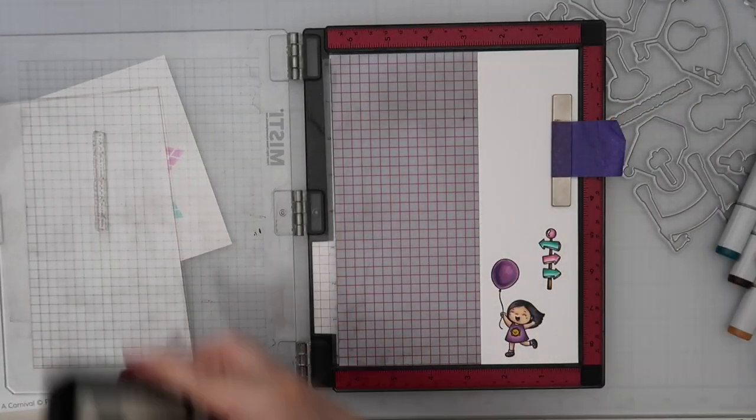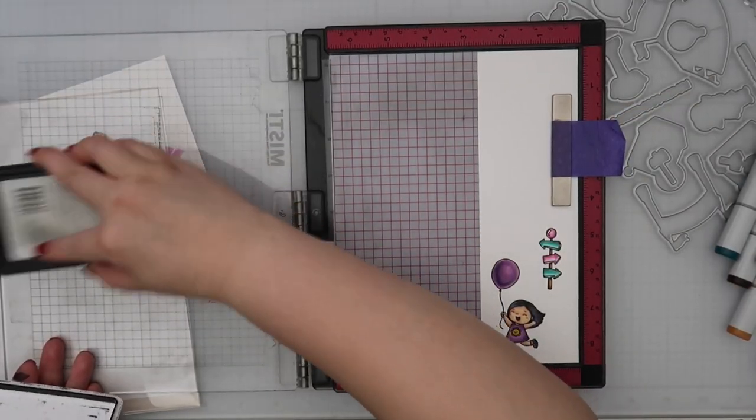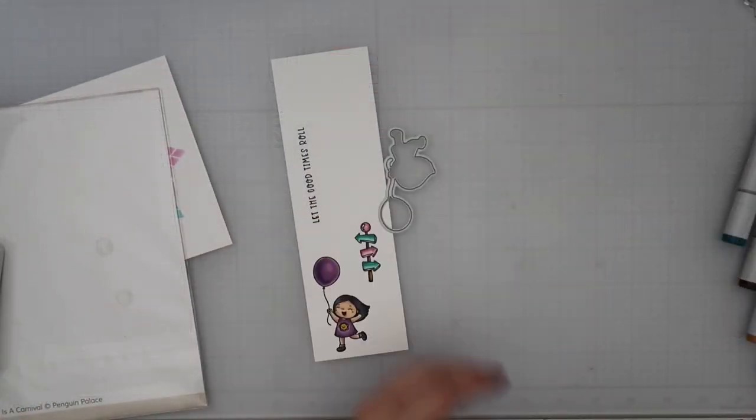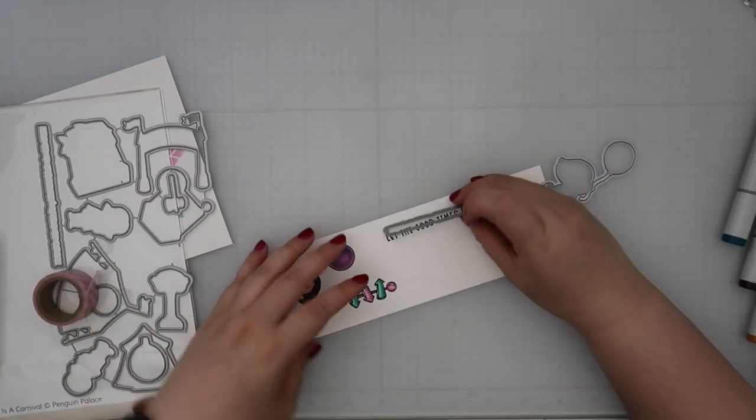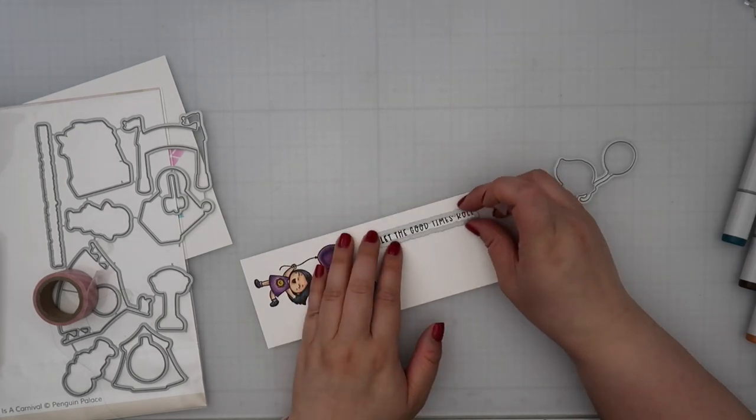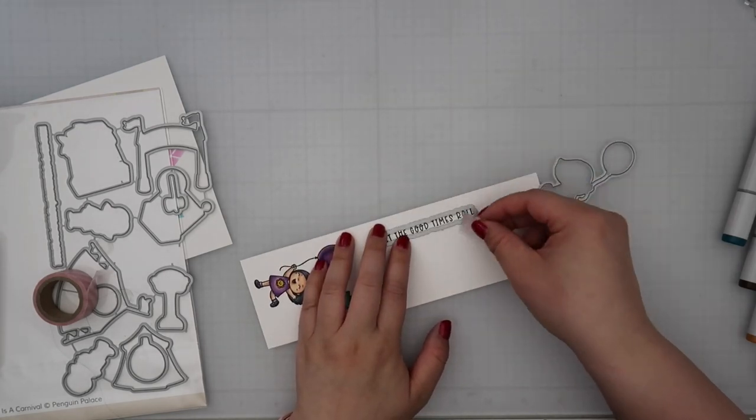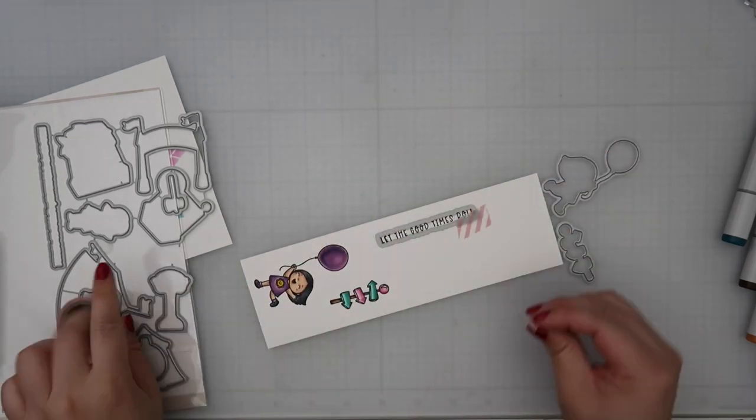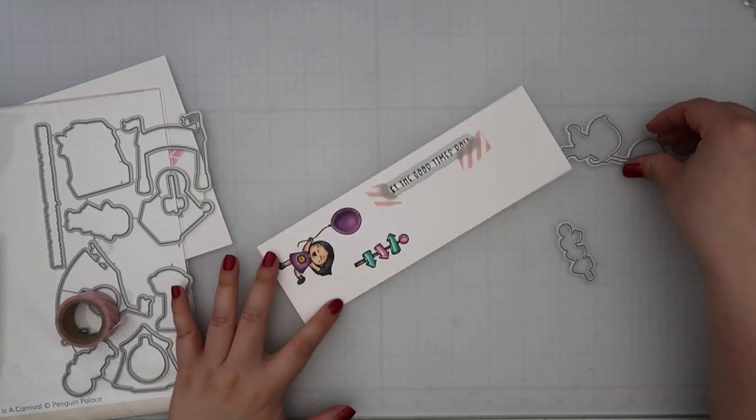So once I finish coloring up the images I go ahead and pull out the coordinating dies and I will cut out the sentiment that I picked out which is let the good times roll. I think that's so cute. I will be die cutting out the girl and the sign as well and I will put this whole card together.